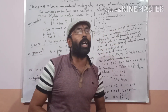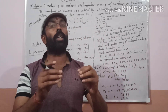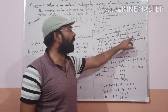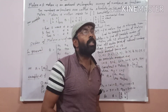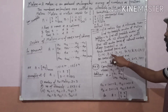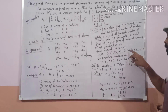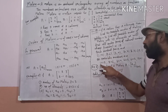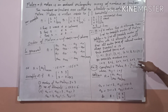Let us take another example. A matrix has 12 elements. What are the possible orders? To find all possible orders, we find all ordered pairs of natural numbers whose product is 12. Such order pairs are: 1×12, 2×6, 3×4, 4×3, 6×2, and 12×1. So the possible orders are 1 by 12, 2 by 6, 3 by 4, 4 by 3, 6 by 2, and 12 by 1.